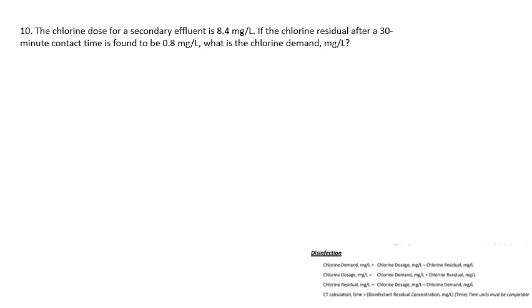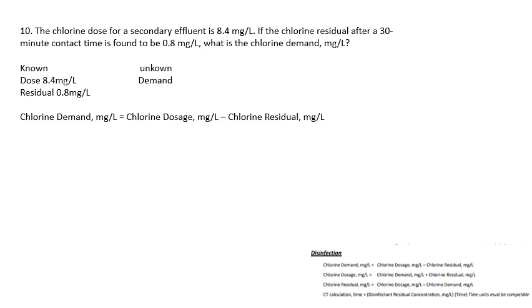Question number ten: the chlorine dose for a secondary effluent is 8.4 mg/L. If the chlorine residual after a 30-minute contact time is found to be 0.8 mg/L, what is the chlorine demand? The dose is 8.4 mg/L and the residual is 0.8 mg/L. Using the demand formula — chlorine dosage minus chlorine residual — 8.4 minus 0.8 shows a chlorine demand of 7.6 mg/L.